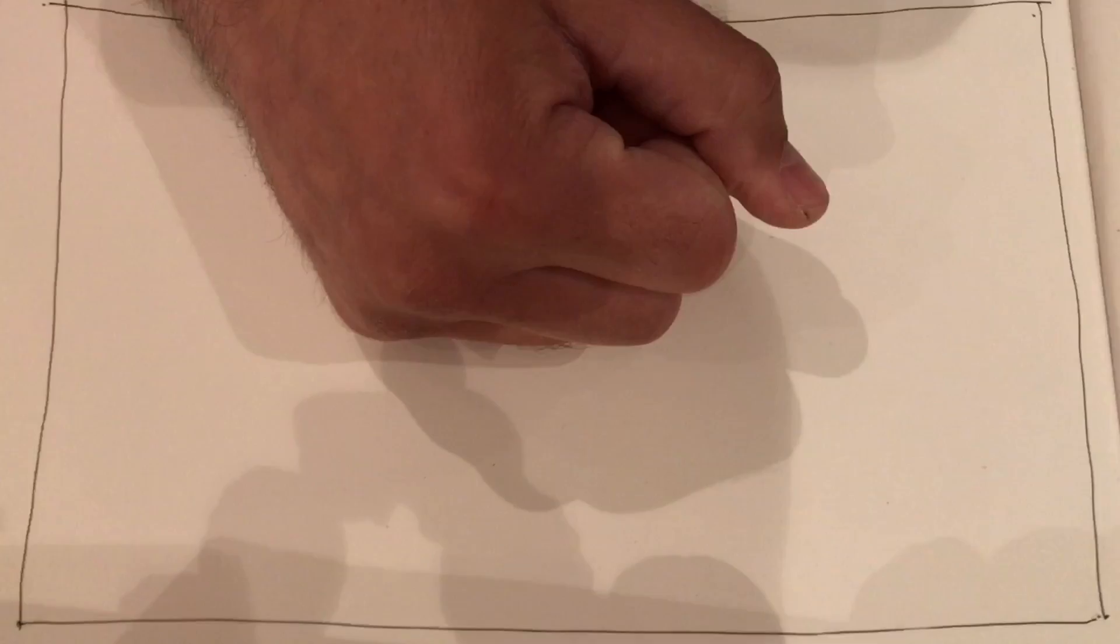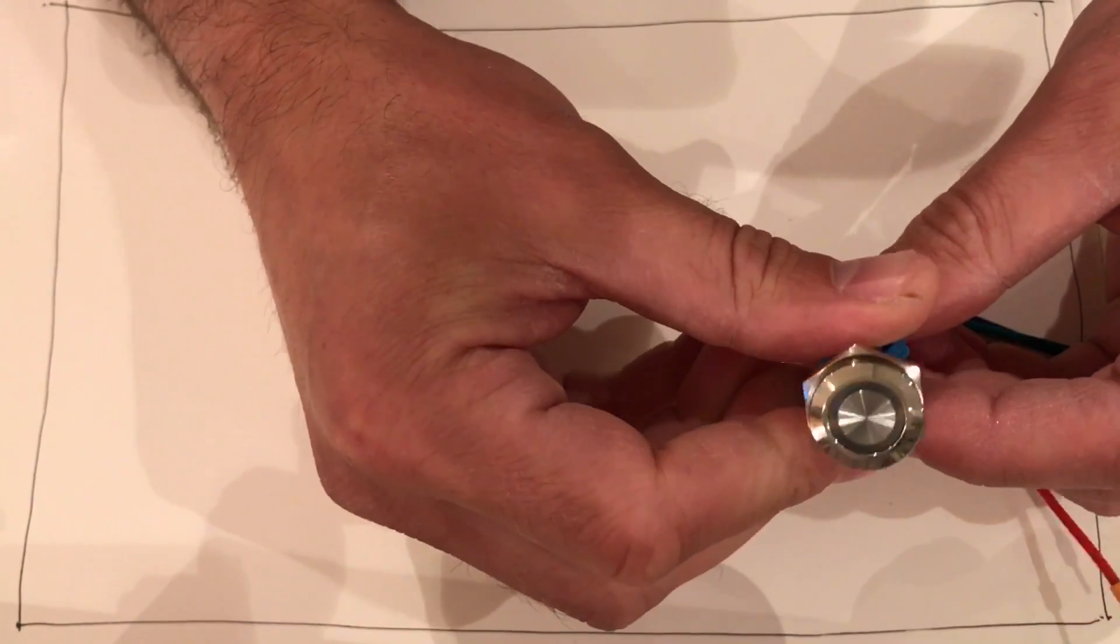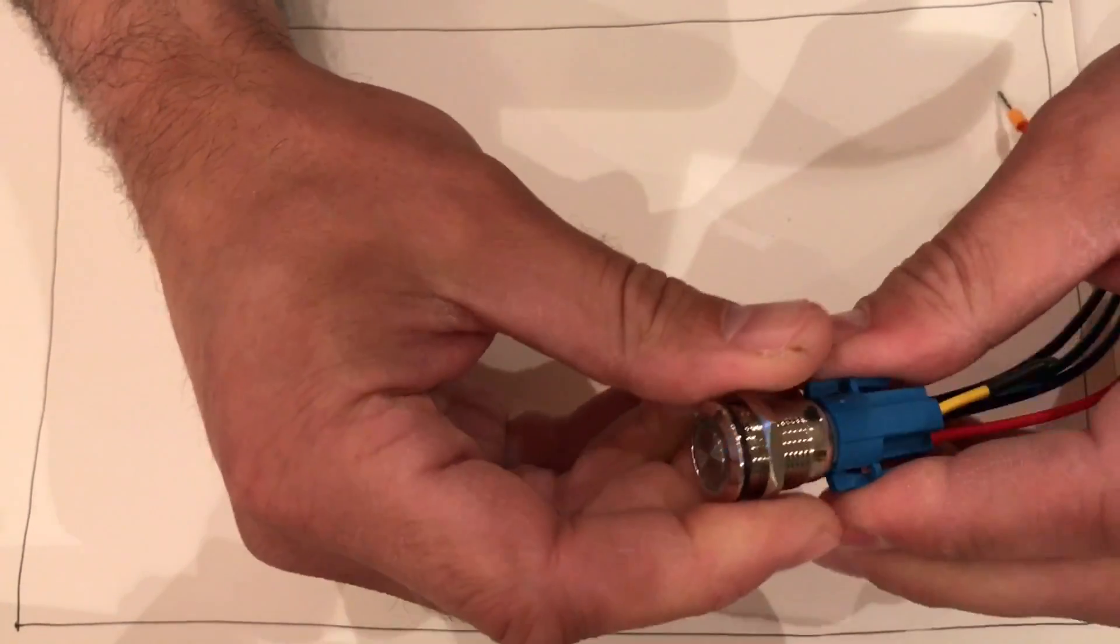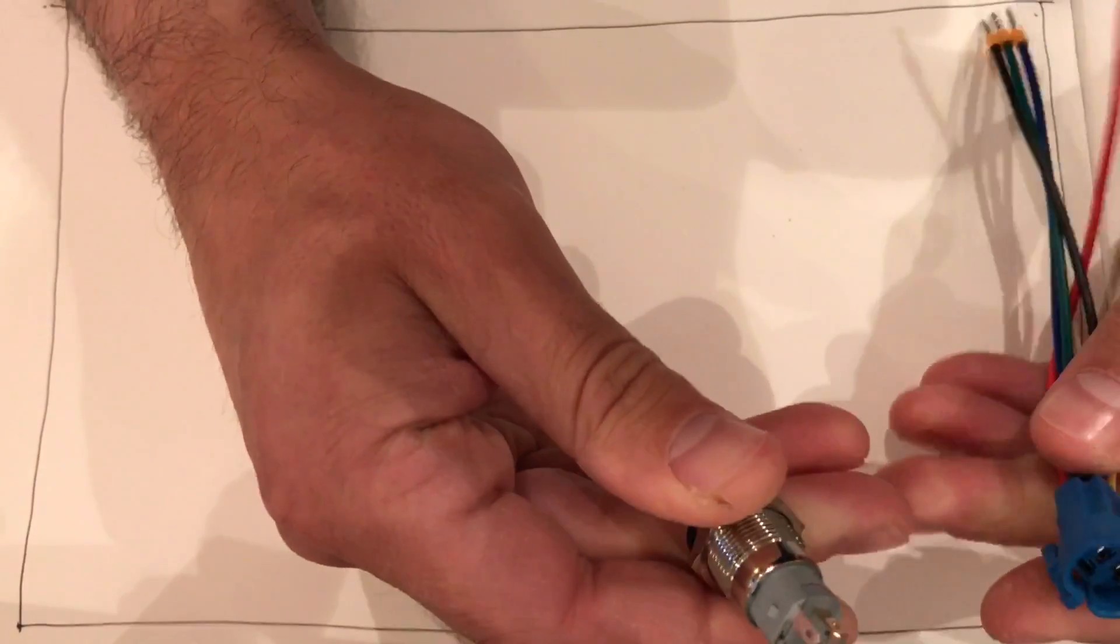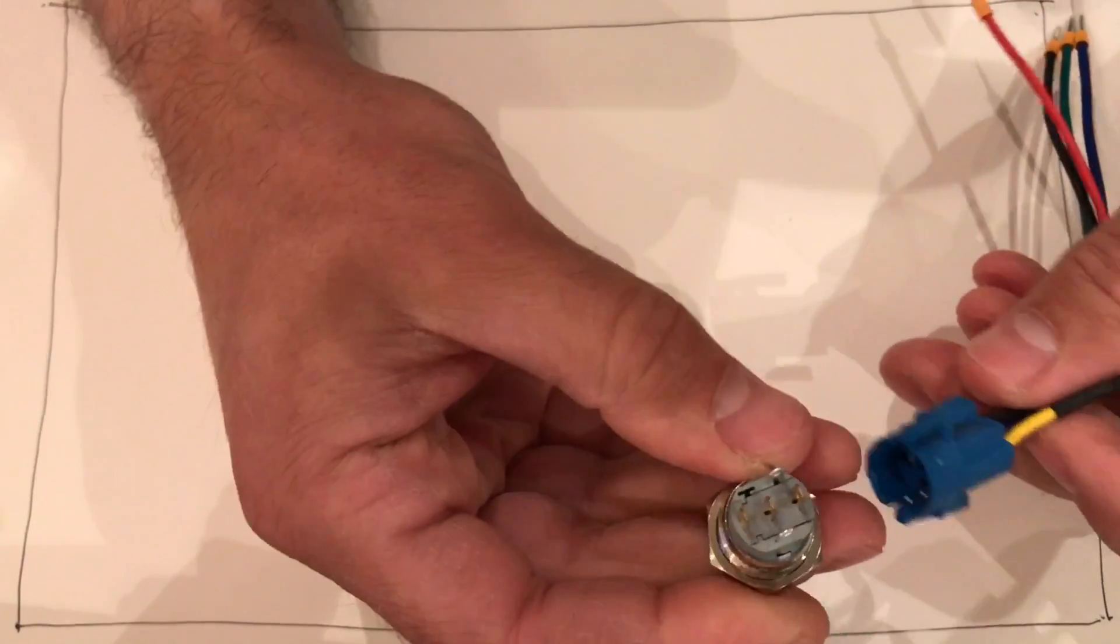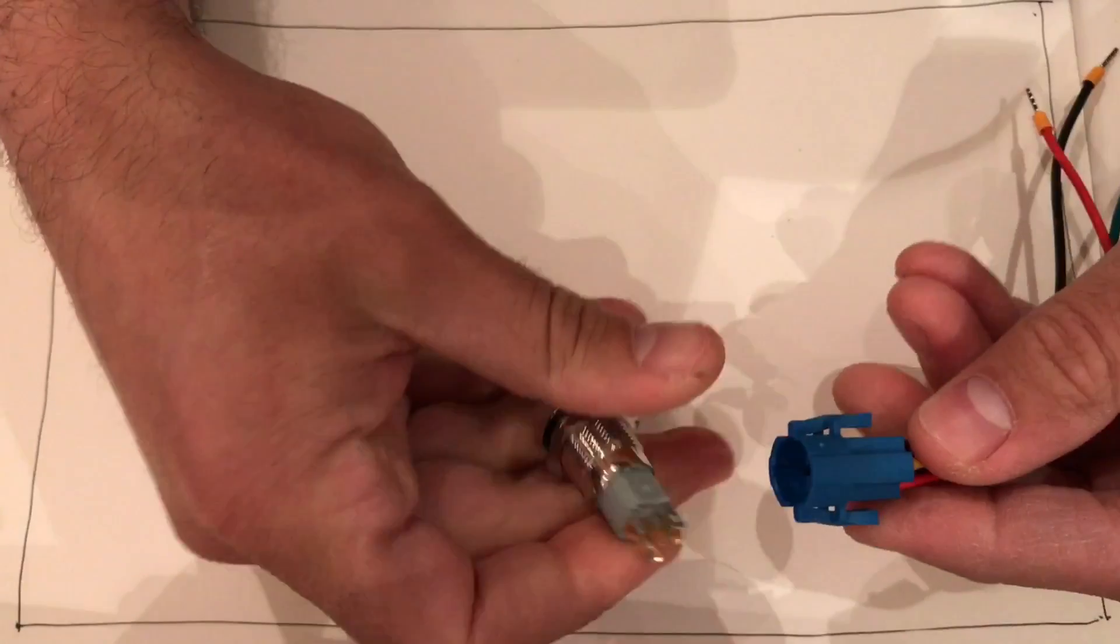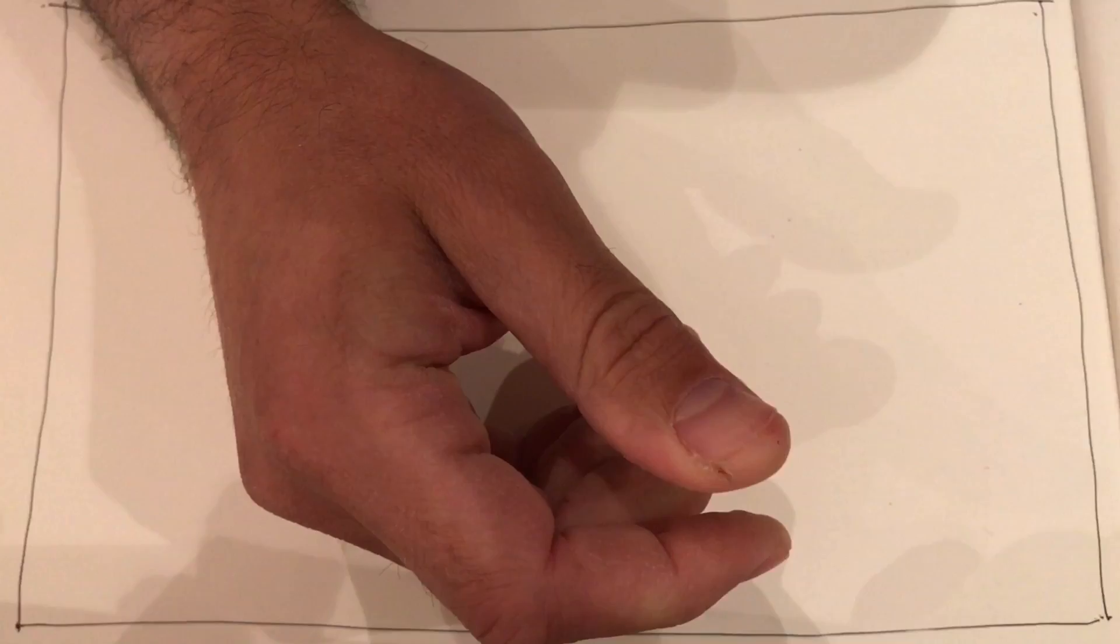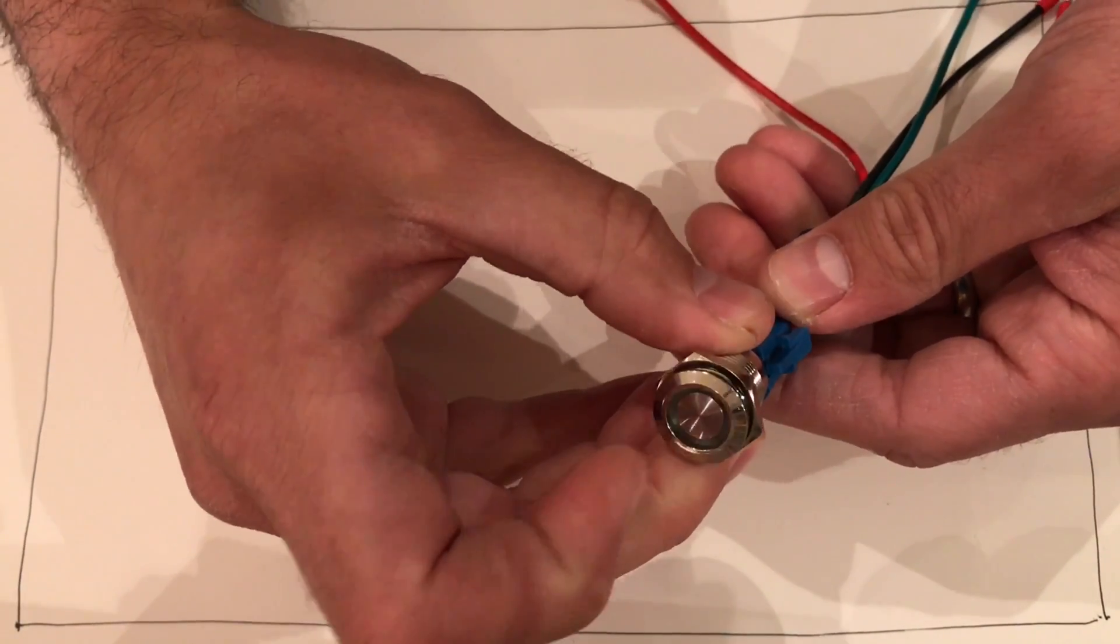I've got a momentary switch for reset - one of the type that lights up. To save soldering onto the ends of these, I've got these little attachment bits.